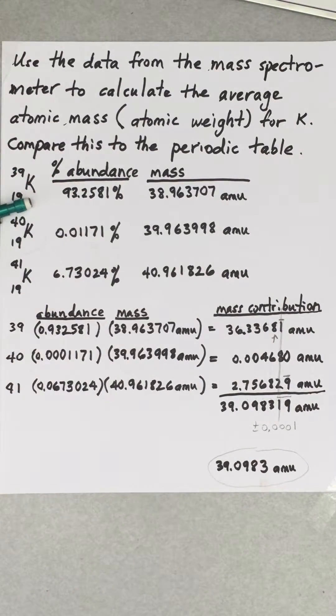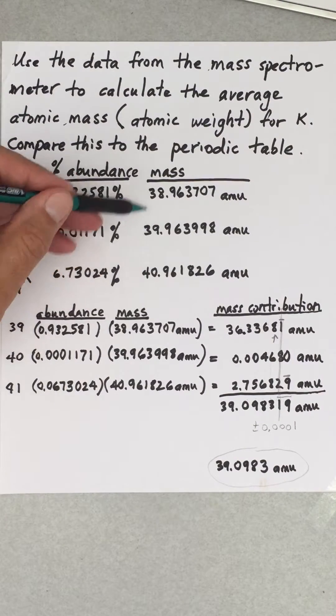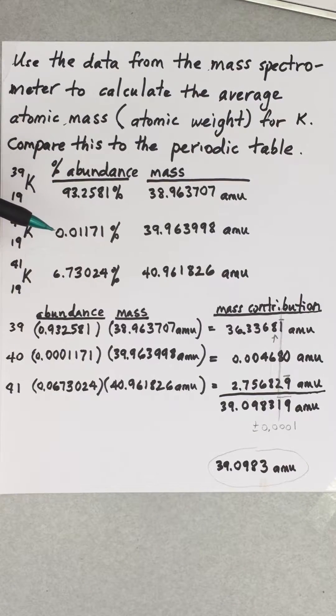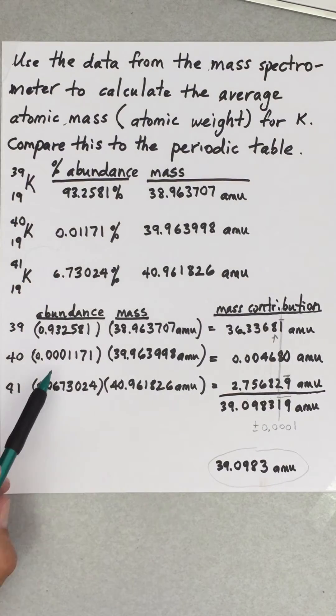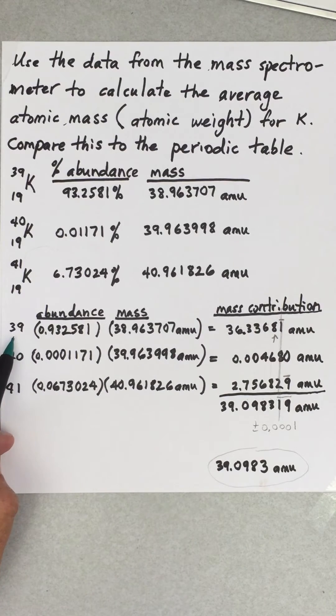So the other thing about this is that what we did is this calculation is called a weighted average. If you were to take the regular average, in other words divide up these three numbers and then divide by three, you would then be assuming that the percent abundance would be one third, one third and one third. That's an unweighted average. But here we have a weighted average where the weight is actually how much there is of each thing. So here the greatest weight, in other words the greatest mass contribution, is coming from potassium 39.